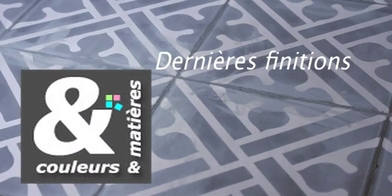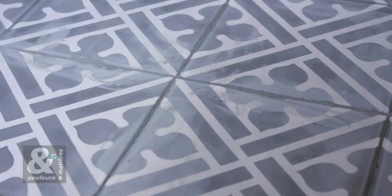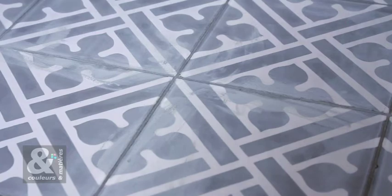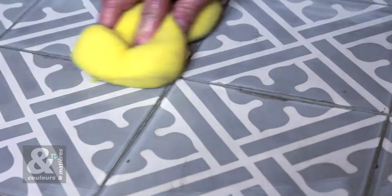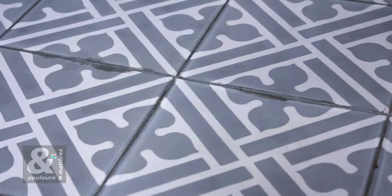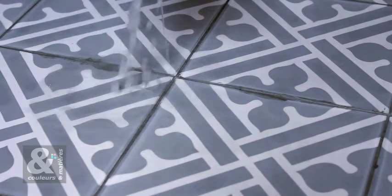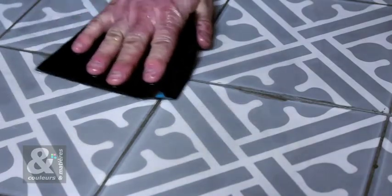Last finishes. The day after the pouring of the joints, you must check that there are no remaining cement traces on the tiles. If found, remove with abrasive sandpaper and water. Choose a fine grain.